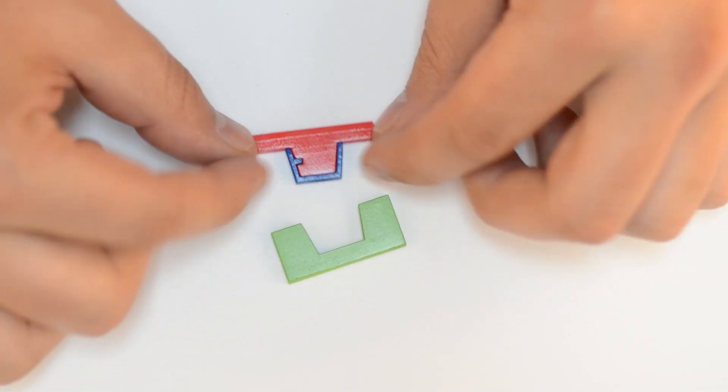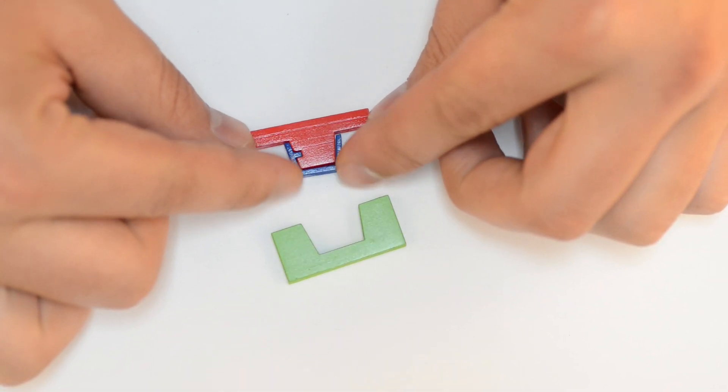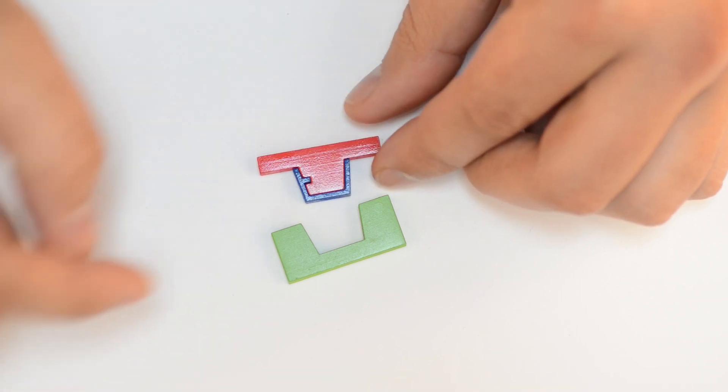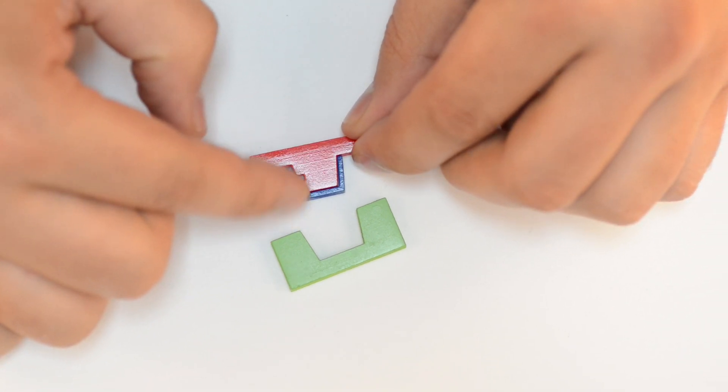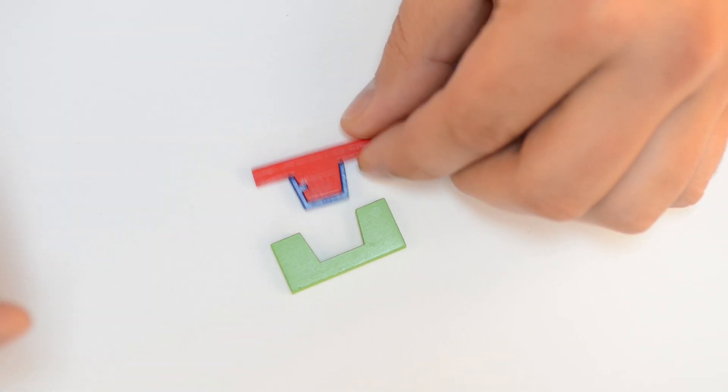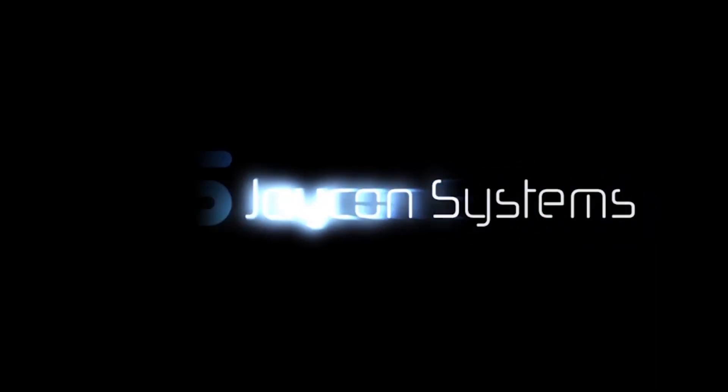But when you go to separate the mold and the part, they get stuck. That's what an undercut causes, the inability to slide the part and or the mold away from each other. And that's why you want to avoid undercuts.